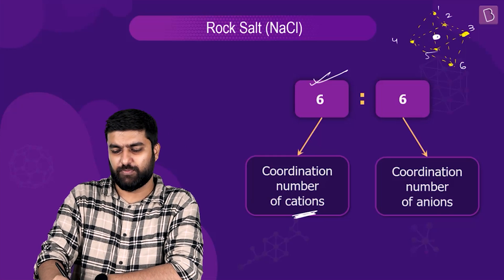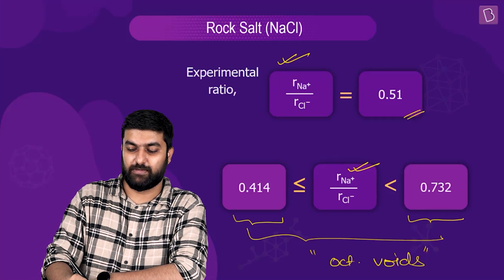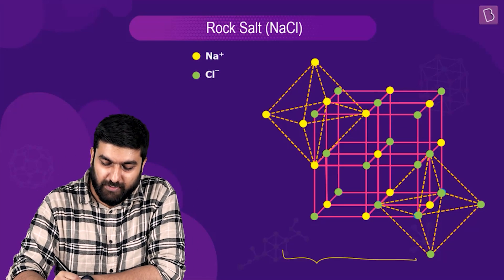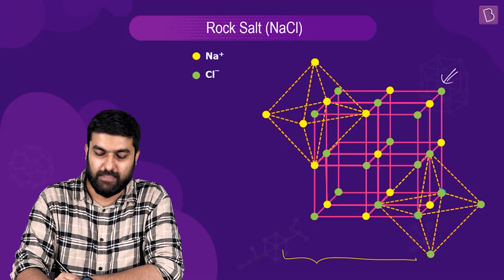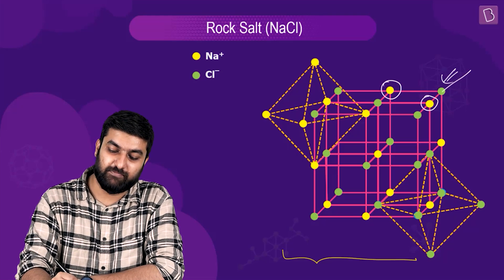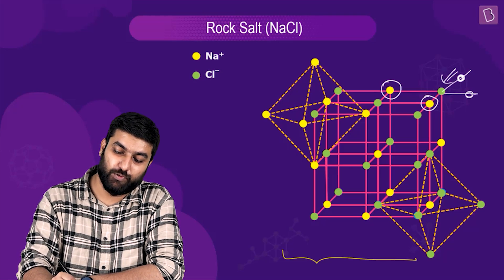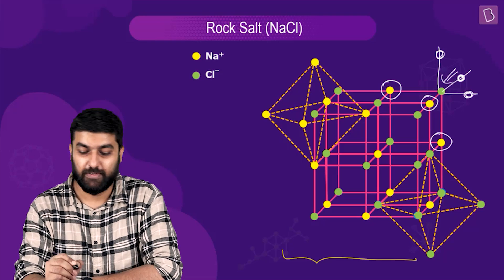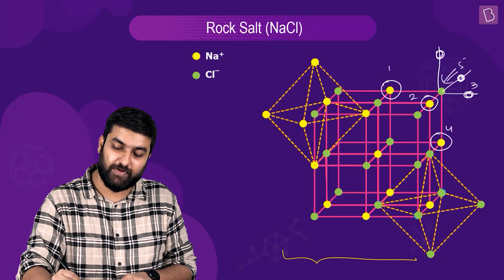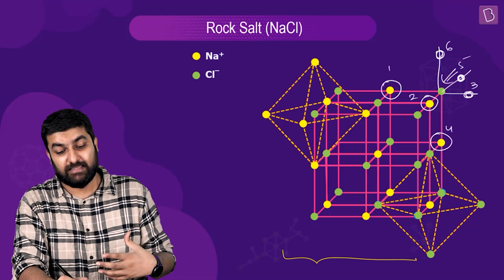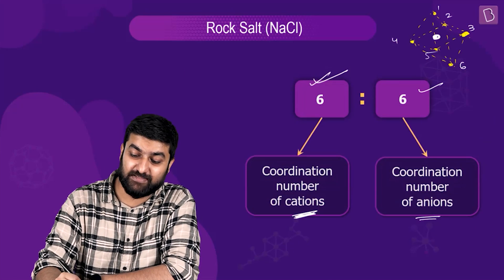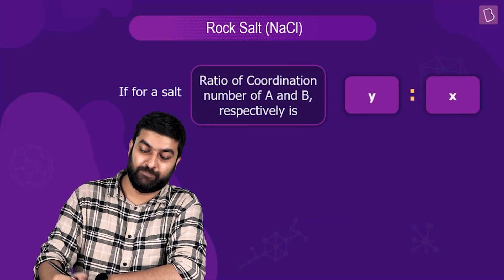Now what about the coordination number of the anions? Looking at the diagram, what is the coordination number of any of the green spots? Each green Cl⁻ ion is closest to one yellow cation here, one here, one here, one at the bottom, one at the top — so one, two, three, four, five, six. We get six cations contributing to the coordination number of the anion, which is also six.